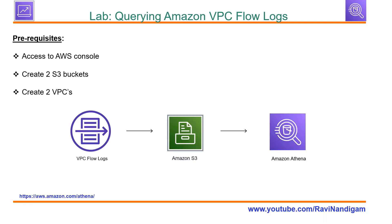Let's understand the usage of Athena through a quick lab. What we are going to do is query VPC flow logs from the Amazon Athena interface. The prerequisites we need are access to the AWS console. I'm going to create two S3 buckets — one that holds VPC flow logs and a second that holds Athena query output.